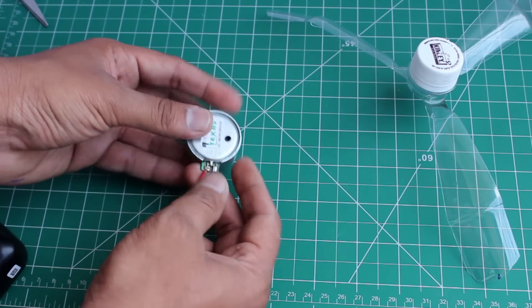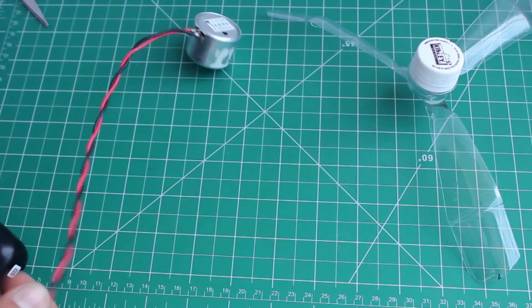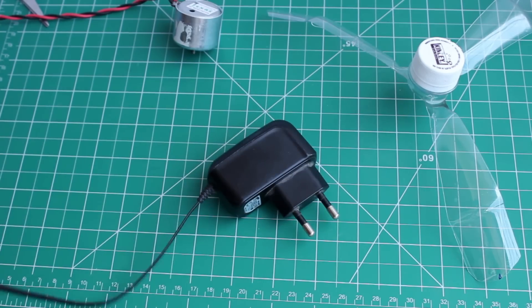Take a 6 watts toy motor and an old mobile charger. Connect both of them using wires. The mobile charger serves as a power source.